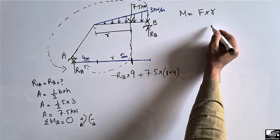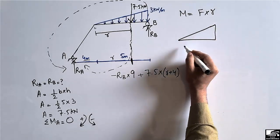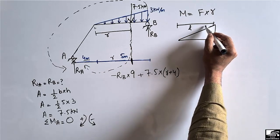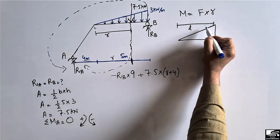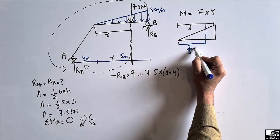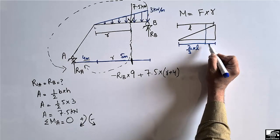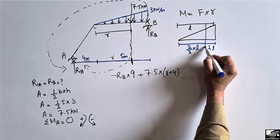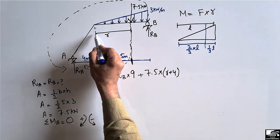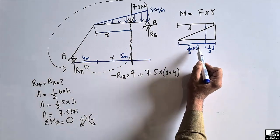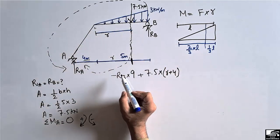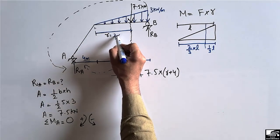To find R, consider that the total horizontal length of the triangle is L = 5 meters. The centroid of a triangle lies at two-thirds of the length from the zero-load end, and one-third from the maximum-load end. So R = two-thirds of 5 meters = 10/3 meters, measured from the zero end of the load.